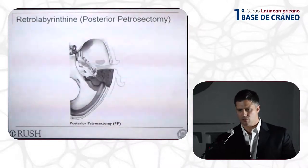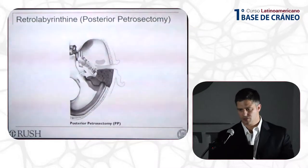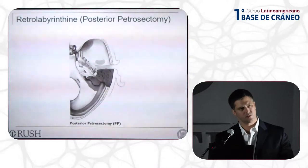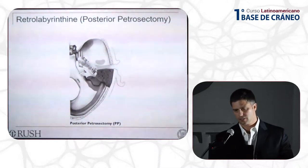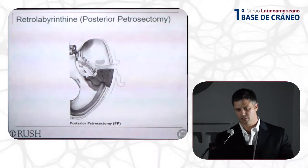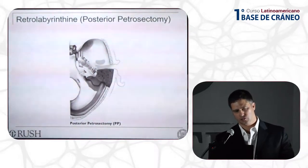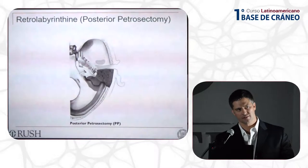The retro-labyrinthine approach, otherwise known as a posterior petrosectomy, includes mastoidectomy, skeletonization of the posterior fossa dura and the labyrinth, and then opening of the posterior fossa dura to approach the cerebellopontine angle. It's been used for trigeminal nerve procedures, vestibular nerve section, and to biopsy cerebellopontine angle lesions. For closure, we'll place a dry fascial graft over the antrum into the middle of the airspace, cover it with a piece of bone, followed by fat.